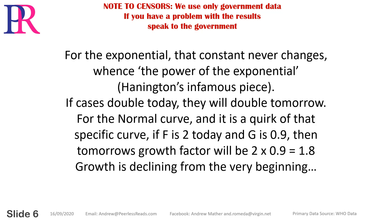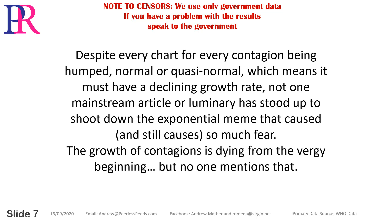If cases double today, they will double tomorrow. For the normal curve — and it is a quirk of that specific curve — if F is 2 today and G is 0.9, then tomorrow's growth factor will be 2 times 0.9, or 1.8. Growth is declining from the very beginning. Despite every chart for every contagion being humped, normal or quasi-normal — which means it must have a declining growth rate — not one mainstream article or luminary has stood up to shoot down the exponential meme that caused, and still causes, so much fear. The growth of contagions is dying from the very beginning, but no one mentions that.